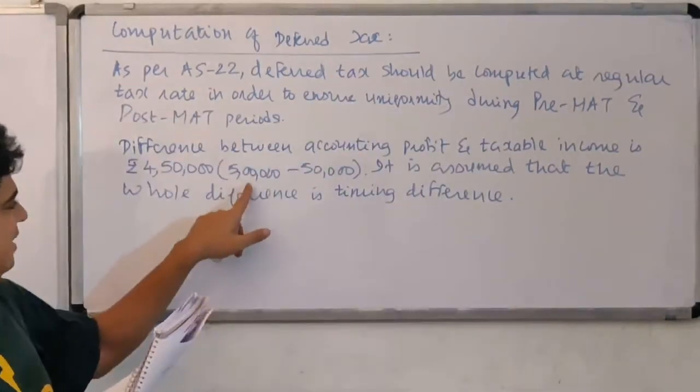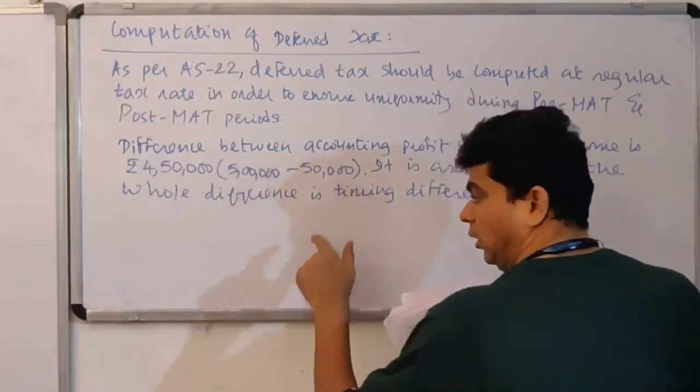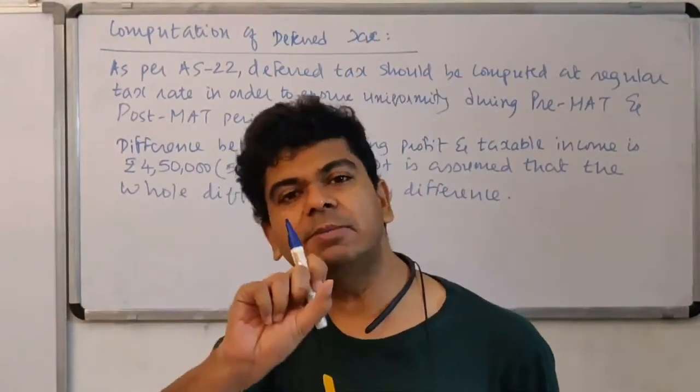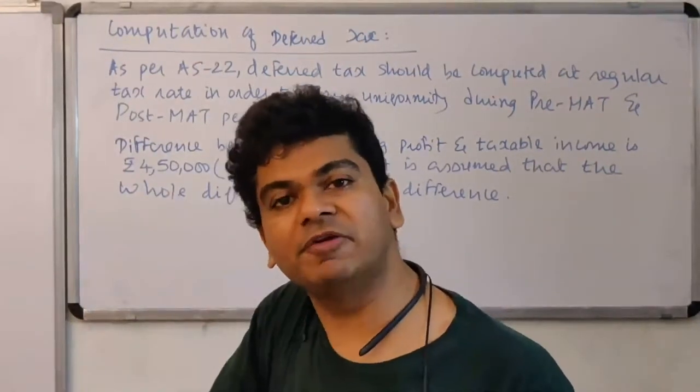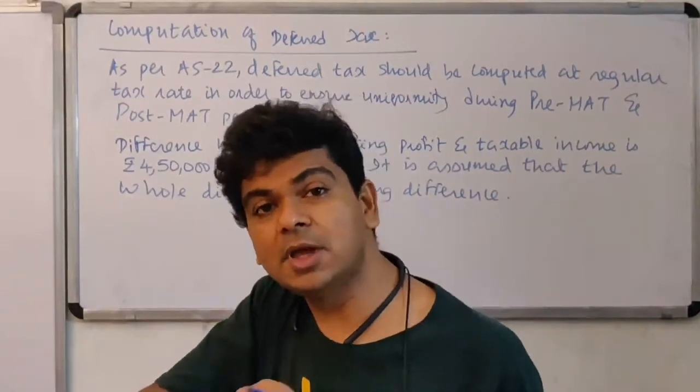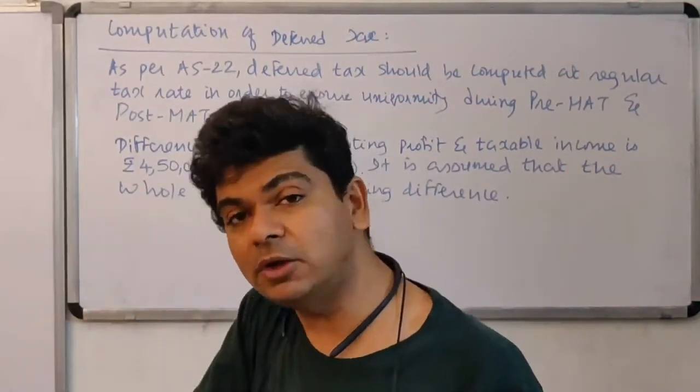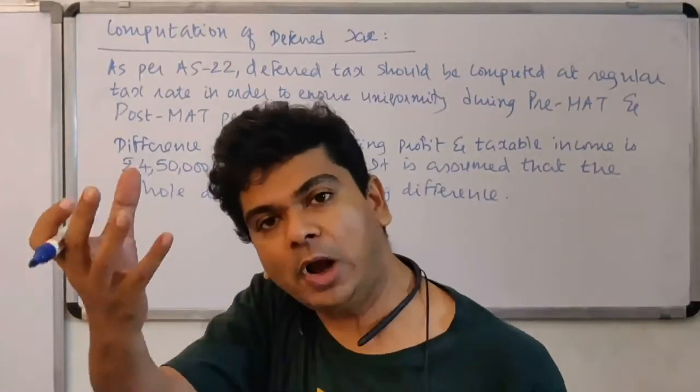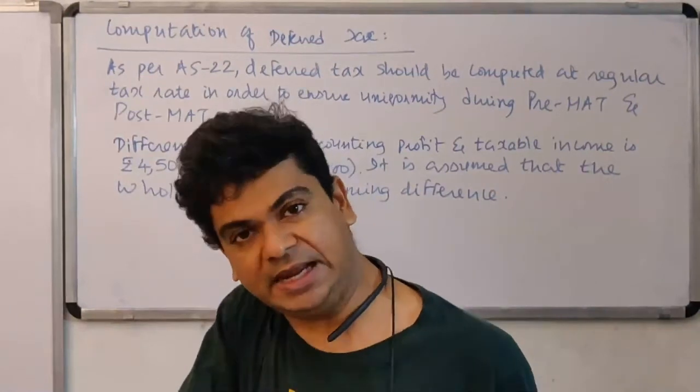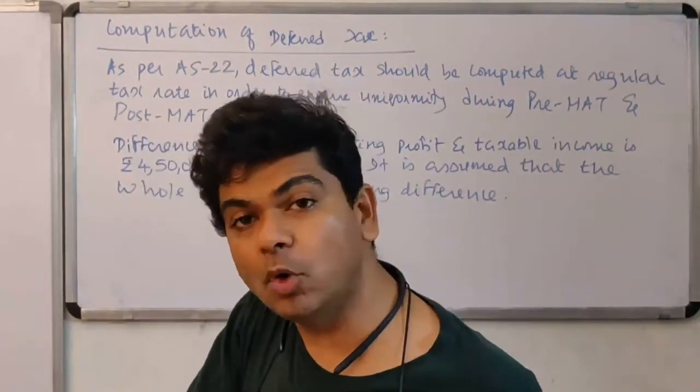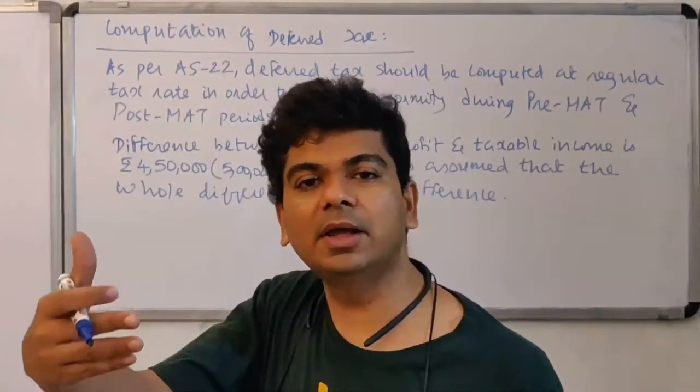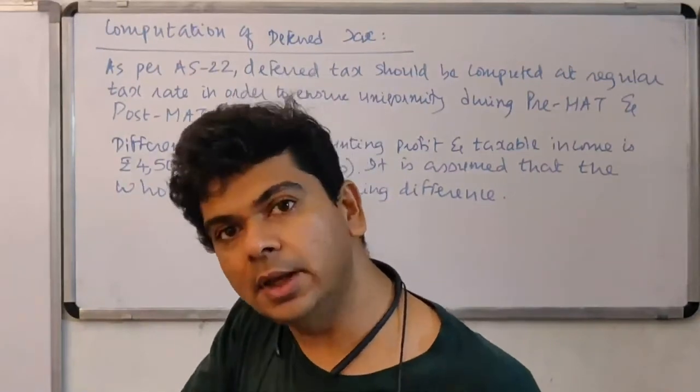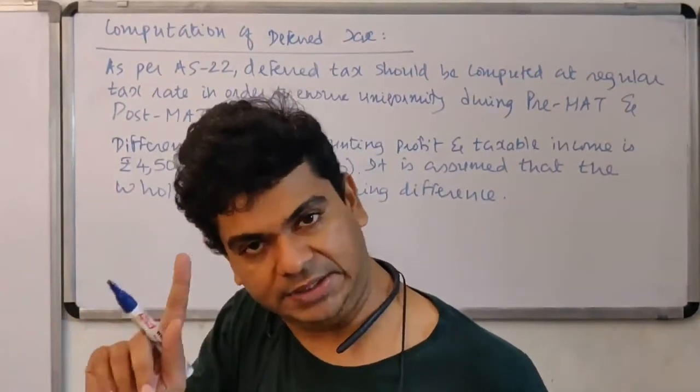Again, proceed very logically. Your accounting profit is 5 lakhs while the taxable profit is only 50,000. This clearly means that you are claiming large number of deductions for tax. Your taxable income is lower. How is it possible that my profit as per the P&L is 5 lakhs, but when I sit down to compute my tax, my taxable income is turning out to be only 50,000? It's quite possible that there might be a lot many expenses which I have deferred in my P&L, but I have claimed that entirely for tax. If the taxable income is lower, naturally in the current year I will pay lower tax. And if you are paying lower tax in the current year, in future you will be liable to pay more tax. Since you will be liable to pay more, you should recognize deferred tax liability. Isn't it? So I recognize DTL.